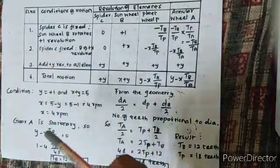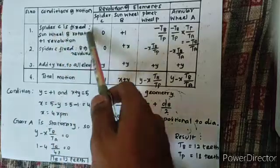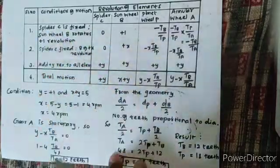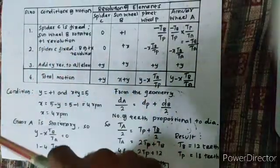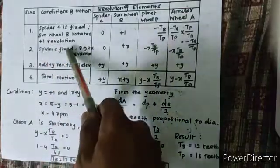That means the arm is connected to the planet wheel. So spider C is fixed and sun wheel B rotates 1 revolution. We take counterclockwise, anticlockwise as plus, so plus 1 revolution for B.